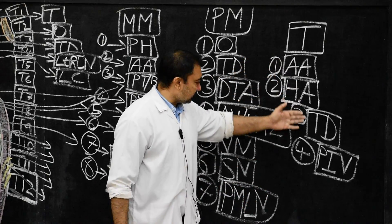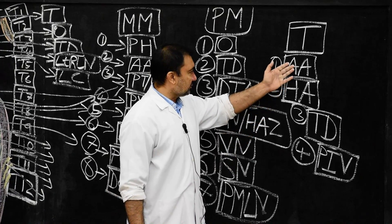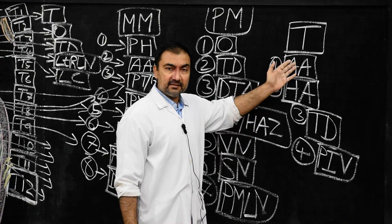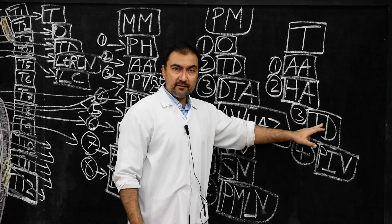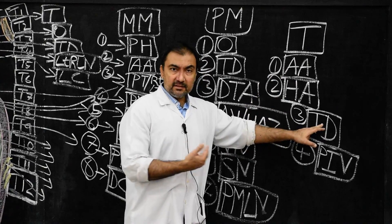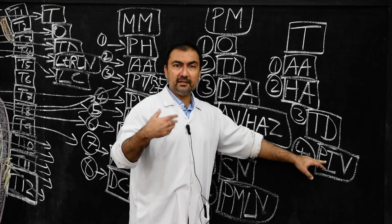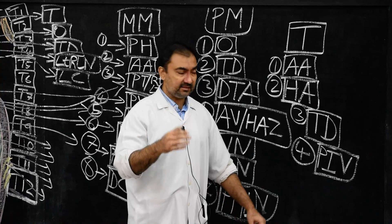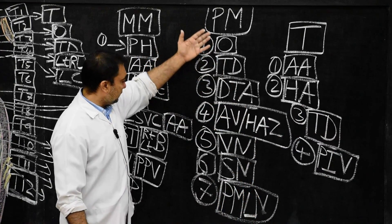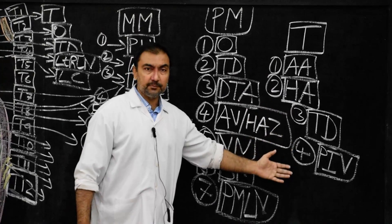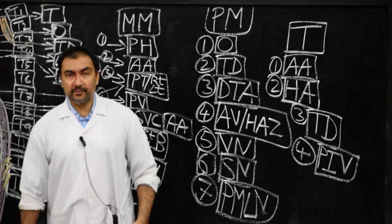These are the transverse structures located in posterior mediastinum: termination of accessory azygous vein, termination of hemi-azygous vein, then the thoracic duct where it deviates from right to left side, and the posterior intercostal arteries and veins. Here we have finished the entire structures present in the posterior mediastinum. Thank you very much.